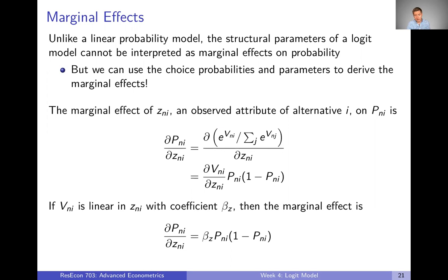There's some math here to derive these. Ultimately, if we assume that representative utility is linear and the parameter on z is beta_z — so if z is cost of driving, then beta_z is whatever that parameter is in front of cost — then the marginal effect of cost of driving on the probability of driving is just that parameter times the choice probability of driving times one minus the choice probability of driving. Beta is something our model estimates, the choice probability is something we can calculate from our parameters, and we put all those pieces together to get this marginal effect.